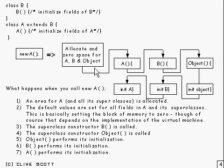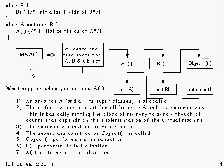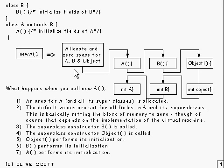This illustrates what happens when you do new for a constructor. We have class B with a constructor in it, and class A extends B and also has a constructor. When you do new A, the new triggers memory allocation — it allocates an area of memory large enough to hold an object of type A, including its superclasses all the way up the tree. So it allocates space for A, B, and Object. Then it sets the initial values of that allocated area.